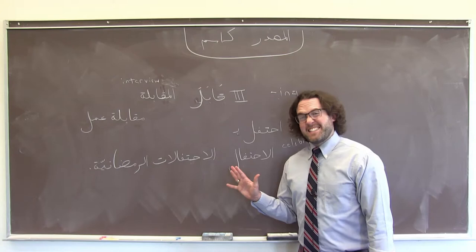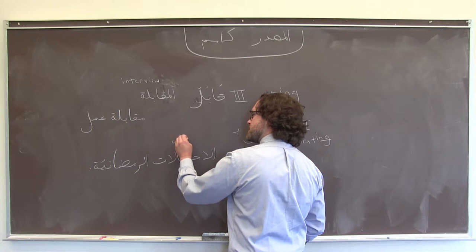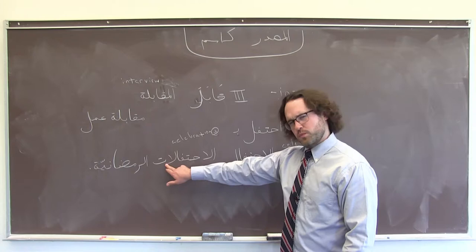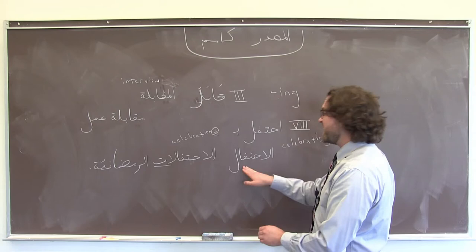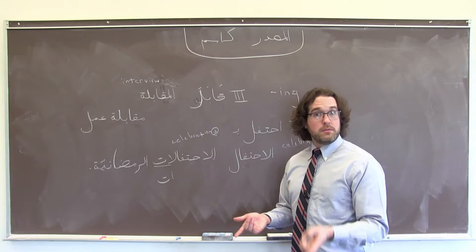One really handy thing when we're trying to convert this idea in our minds from the 'ing' form to an actual noun — 'celebrating' to 'celebrations' — is that if we ever need to make a مصدر plural, especially in derived forms from 2 through 10, there is a very good chance that it's a regular feminine plural. Even though احتفال in the singular doesn't have a تاء مربوطة, we can make it plural with ألف وتاء.